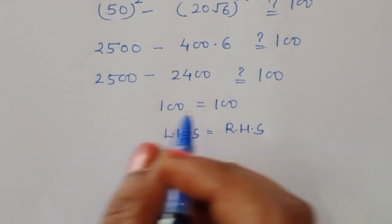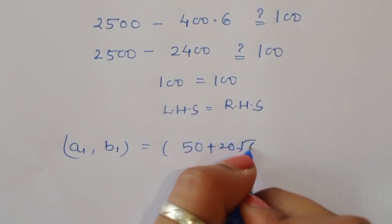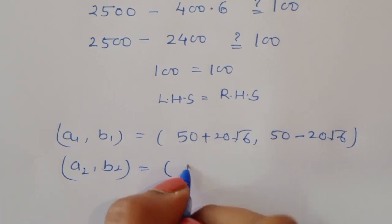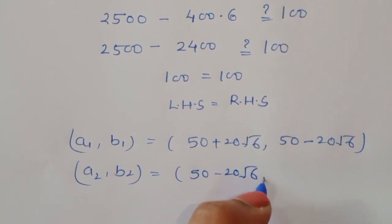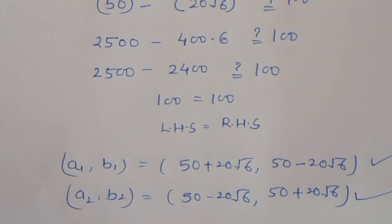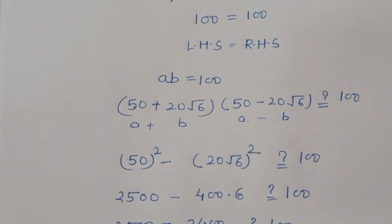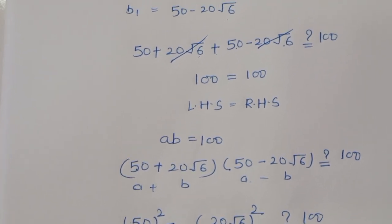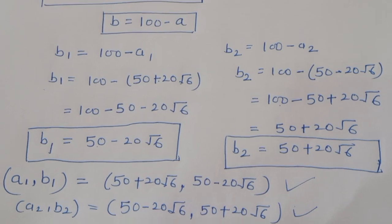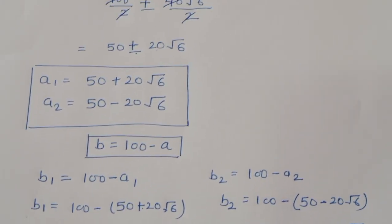So we got both correct values: a1 and b1 are 50 plus 20 root 6 and 50 minus 20 root 6, and the pair (50 minus 20 root 6, 50 plus 20 root 6) is also a correct solution. Thank you.